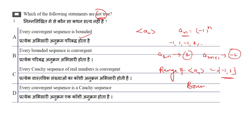The sequence aₙ = (−1)^n is bounded, but not convergent — the even terms tend to 1 and odd terms tend to −1, giving two limit points. So option B is NOT correct. Since the question asks for the NOT true statement, option B is the answer.